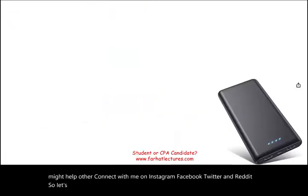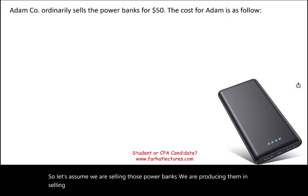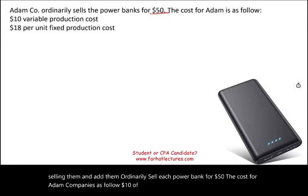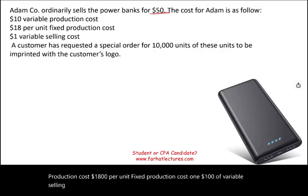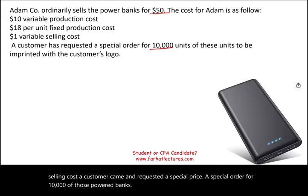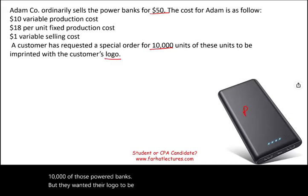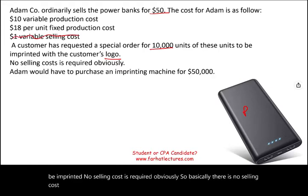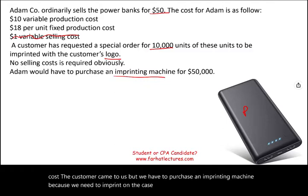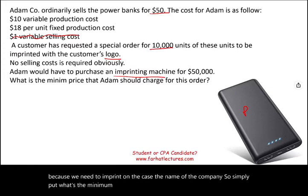Let's assume we are selling power banks — producing and selling them. Adam ordinarily sells each power bank for $50. The cost structure is: $10 variable production cost, $18 per unit fixed production cost, and $1 variable selling cost. A customer requested a special order of 10,000 power banks but wanted their logo imprinted on them. No selling cost is required since the customer came to us, but we have to purchase an imprinting machine. What's the minimum price we should charge?